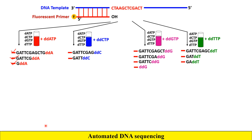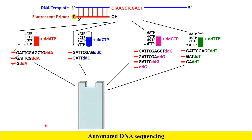Up to this point the steps are similar to the standard dideoxy method. Now, in automated sequencing, all these fragments from the four tubes are subjected to polyacrylamide gel electrophoresis (PAGE). Once we run PAGE, the fragments get separated according to their size. Importantly, the dideoxy bases used are fluorescently labeled with different dyes.